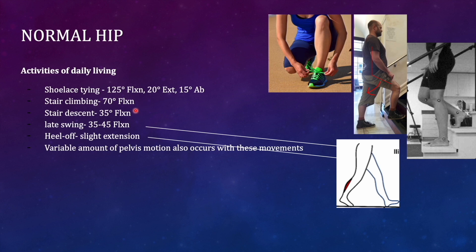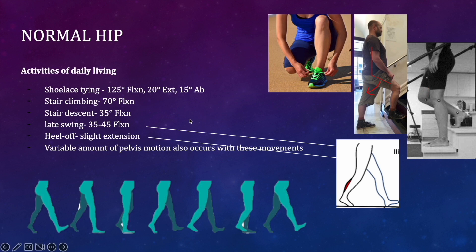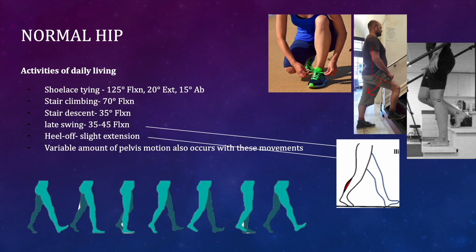When bending down to tie a shoelace, hip flexion is around 125 degrees with 20 degrees of external rotation and 15 degrees of abduction. In stair climbing, flexion is around 70 degrees; in stair descent, around 35 degrees. During gait, in late swing phase when the heel is about to touch the ground, 35–45 degrees of flexion is needed. In heel-off phase, 15–20 degrees of extension is required for push-off. Variable pelvic motion also occurs at the hip, SI joint, and lumbopelvic junction.